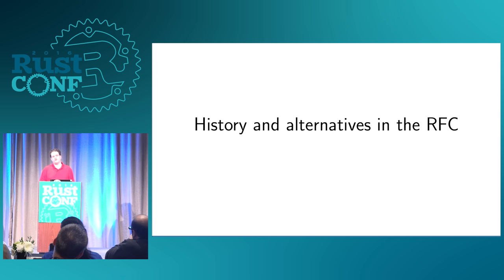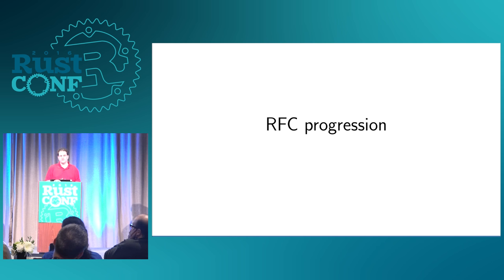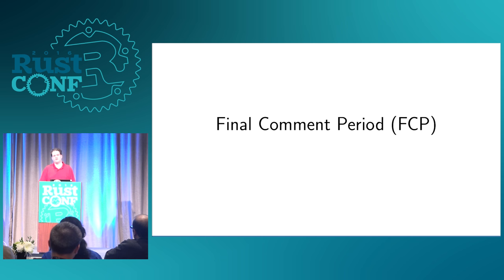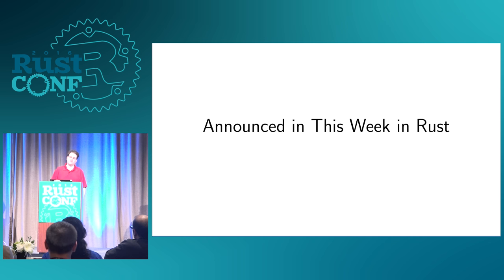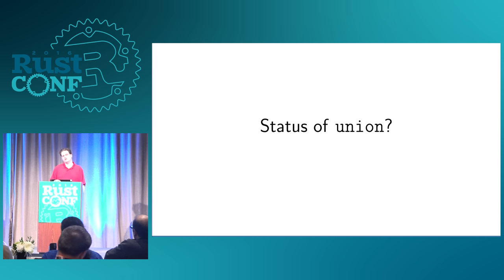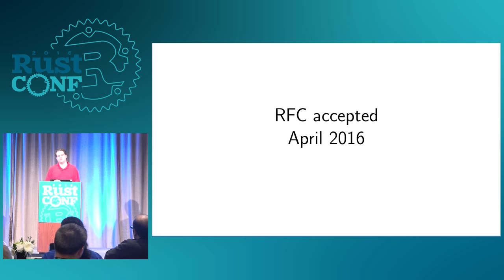How does an RFC progress through the process? There's a bunch of discussion, and when the core team feels like it's ready to say yes or no, it goes into final comment period, or FCP — that says okay, last call, if you have any objections please speak now. This typically gets announced in This Week in Rust, which if you're not already reading I highly recommend. It shows when an RFC is first posted and when it hits final comment period. The RFC was actually accepted in April 2016.